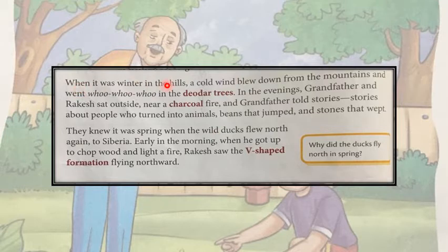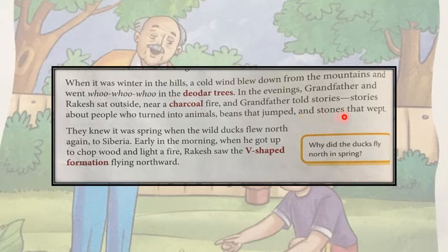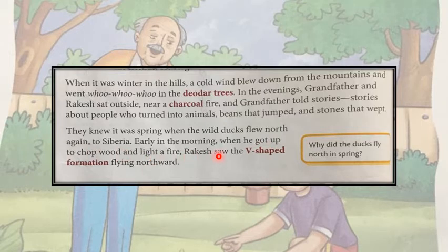When it was winter on the hills, a cold wind blew down from the mountains and went 'woo woo woo' in the deodar trees. In the evenings, grandfather and Rakesh sat outside near a charcoal fire and grandfather told stories — stories about people who turned into animals, beans that jumped and stones that wept. They knew it was spring when the wild ducks flew north again to Siberia. Early in the morning, when he got up to chop wood and light a fire, Rakesh saw the V-shaped formation flying northward.